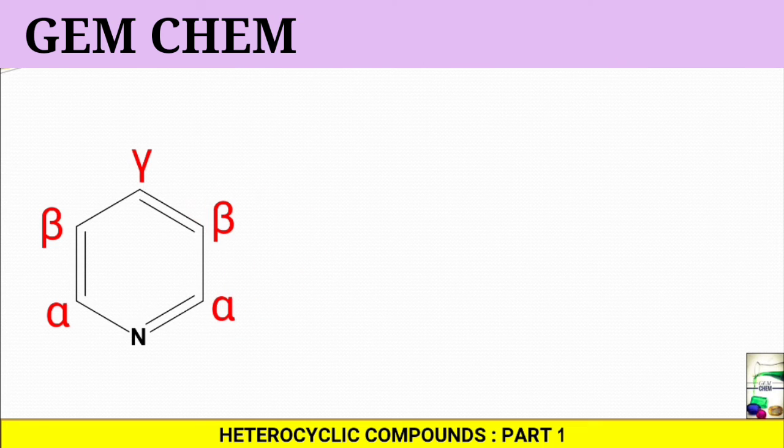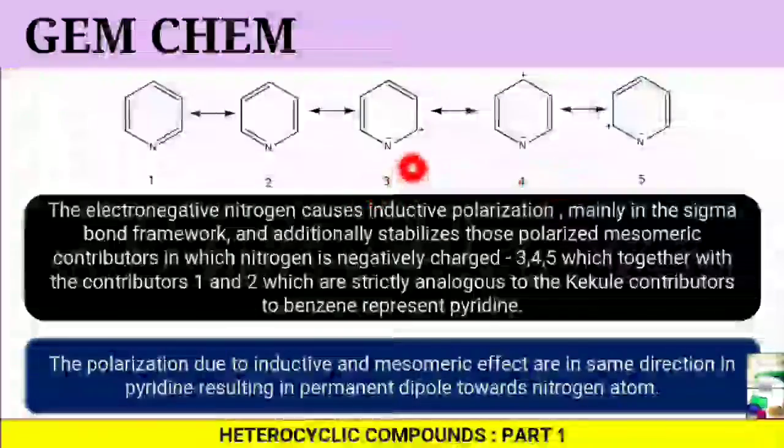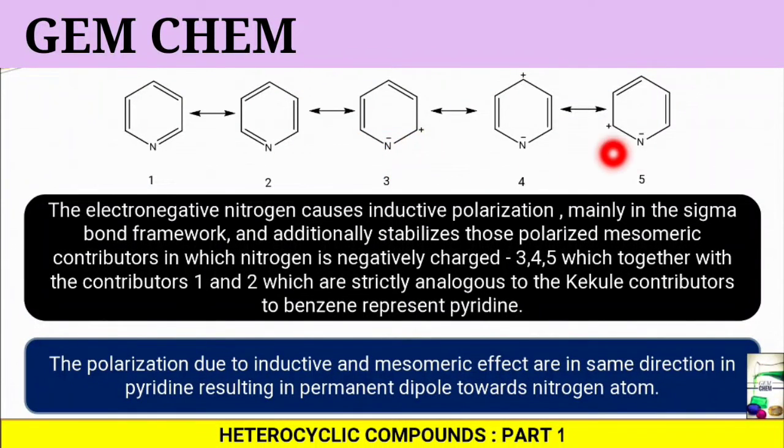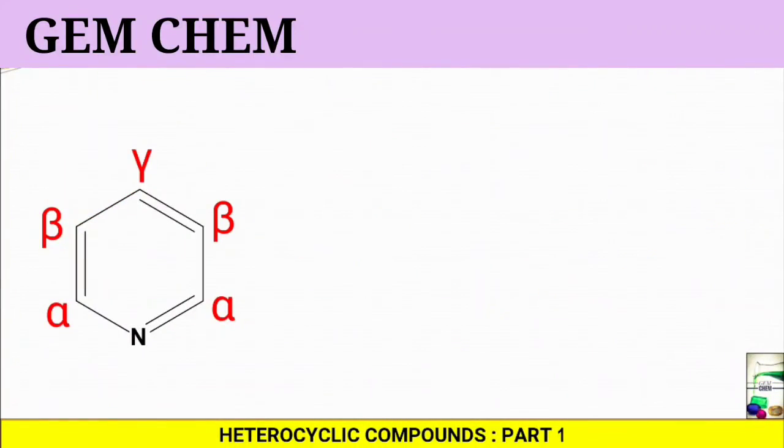This means that fractional positive charge will be present in alpha positions as well as gamma positions, as we have observed in the previous diagrams of resonance structures - that is, positive charges come in alpha positions and only gamma positions, not in beta positions.